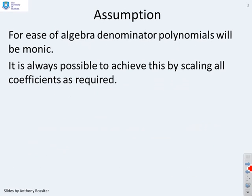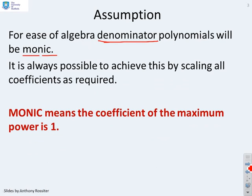Now, for ease of algebra, we're going to assume that the denominator polynomial is monic. You can always achieve this by scaling all the coefficients required. And for those who aren't sure, this is what monic means. It means that the coefficient of the maximum power is 1.